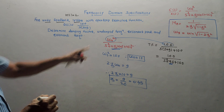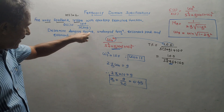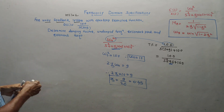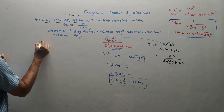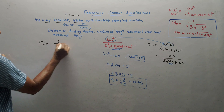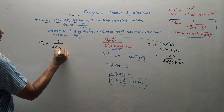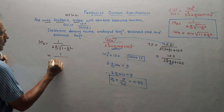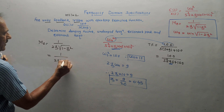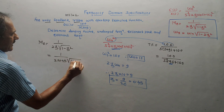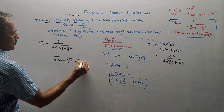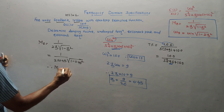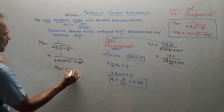Next, resonant peak: using the ready-made formula Mr = 1 upon 2ζ√(1 − ζ²). Putting ζ = 0.45: it is 1 upon 2 × 0.45 × √(1 − 0.45²). The answer for Mr is 1.244.